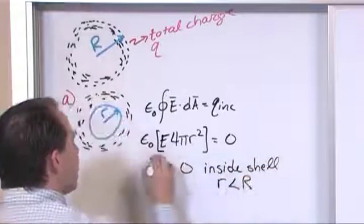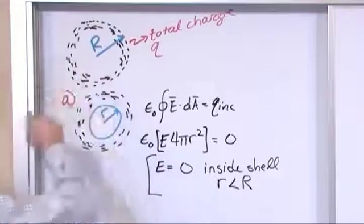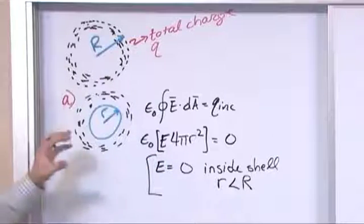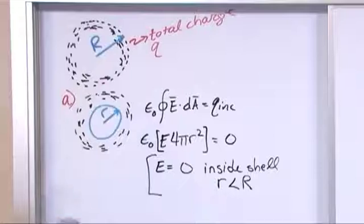This is when r is less than capital R, because remember capital R was the diameter of the shell and little r is the diameter of my little Gaussian surface that's kind of inside there. So the electric field is zero inside there.